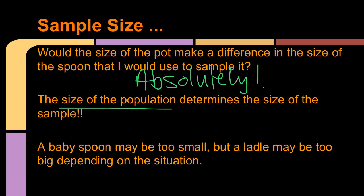The size of the population determines the size of the sample. So a baby spoon might be too small, but a ladle might be too big. So it depends on the situation. If you have a small pot, a baby spoon might be okay. If you have a huge ginormous pot, then maybe you want a ladle.